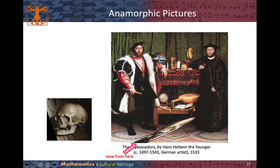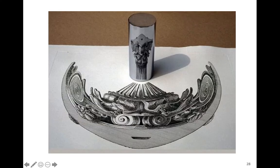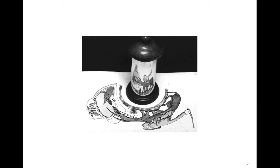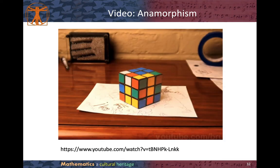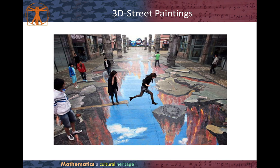One type of anamorphic picture is perspective, like The Ambassadors painting. Another type is called mirrored — usually a conical or cylindrical mirror is used to see the original picture. This technique was developed during the Ming Dynasty in China. Similarly, 3D street paintings also make use of the same technique, with only one vanishing point from which you can see the picture correctly.